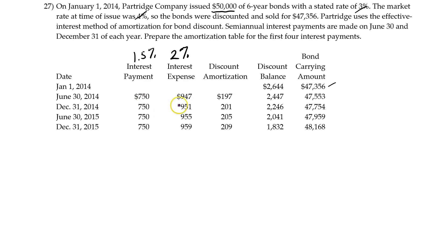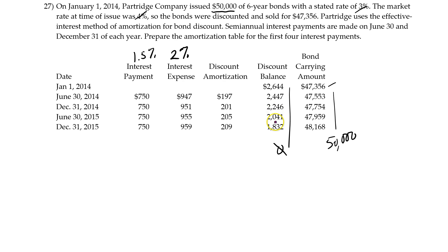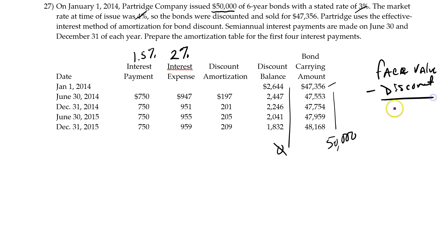The discount amortization is the difference between the two — $750 and $947 — the difference is $197. We reduce our discount balance each period. Over the life of the bond, we want the discount balance to go to zero and the carrying amount to go to the face value, so we subtract these amortization amounts each time. The bond carrying value is the face value minus the discount. As the discount gets smaller, the carrying amount gets bigger.